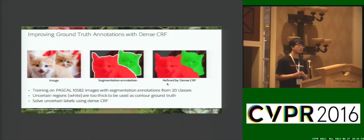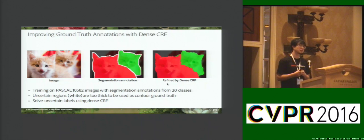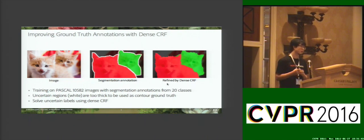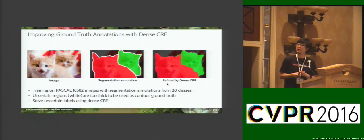We train our network on Pascal VOC. To collect ground-truth contour data for training, we use CDN-CRF to solve the uncertain or unlabeled regions in the Pascal annotations. On the right, we show one example of the refined segmentation masks.